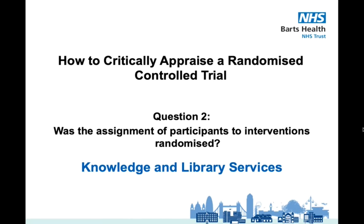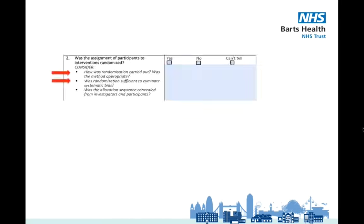The title of this paper says it's a randomised trial, so that's a good indicator, but let's look at the first two consideration points of this question: how was the randomisation carried out, was the method appropriate, and was randomisation sufficient to eliminate systematic bias?